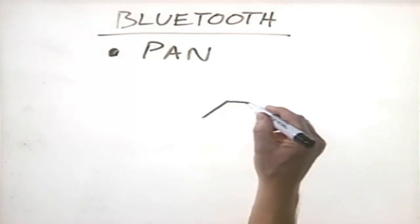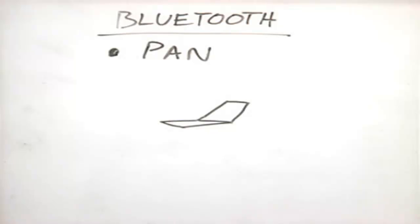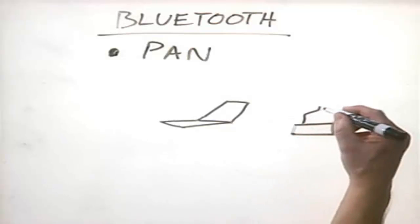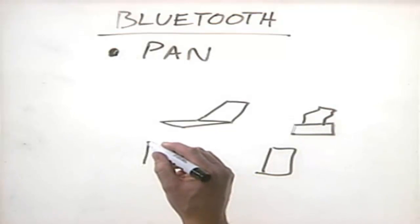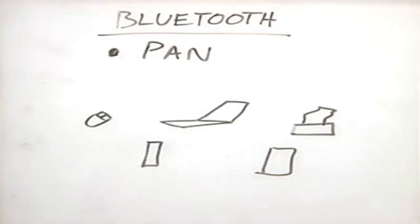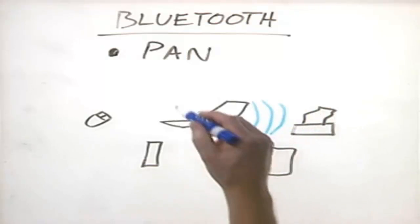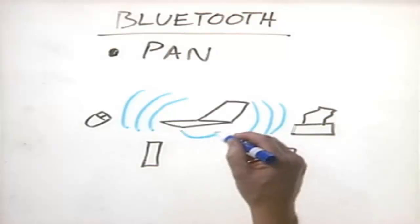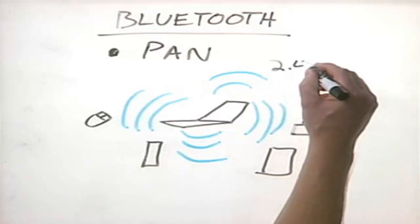For example, if we install a Bluetooth adapter in a notebook — and many notebooks come with Bluetooth already installed — we can send print jobs to a Bluetooth-enabled printer, synchronize data with a PDA, synchronize information with a cell phone, or even use a Bluetooth-enabled mouse. To do this, Bluetooth uses short-range wireless communications similar to 802.11. It operates at a frequency of 2.45 gigahertz.